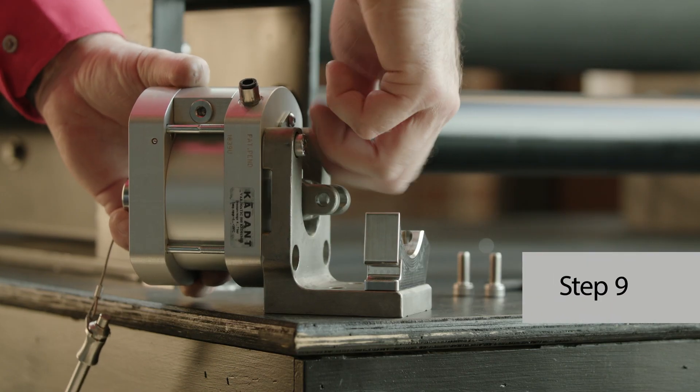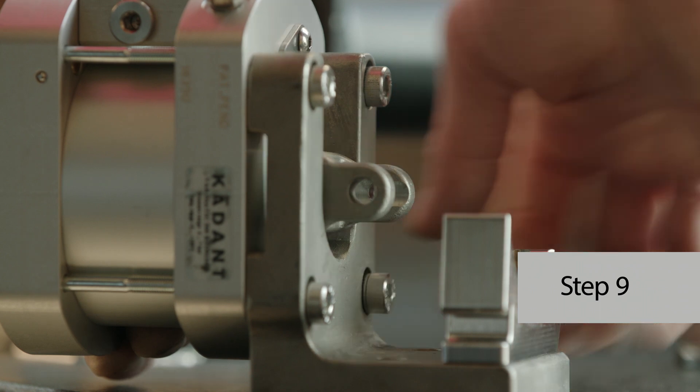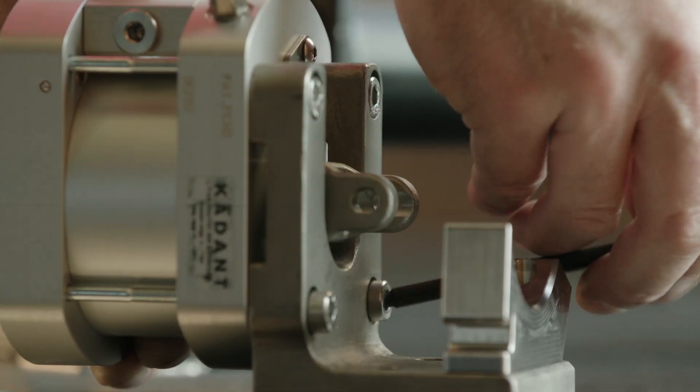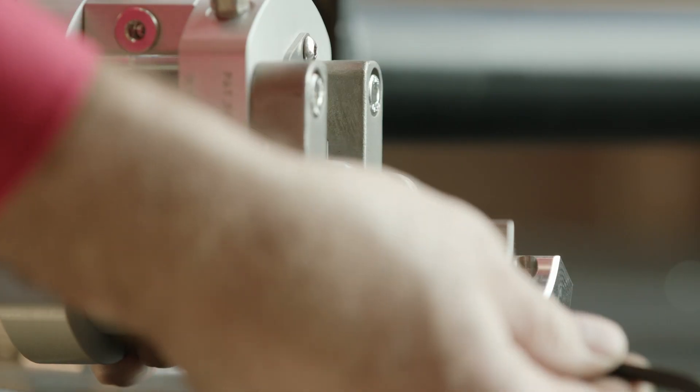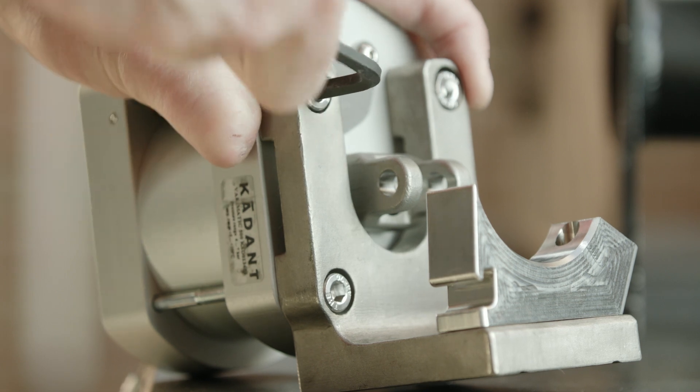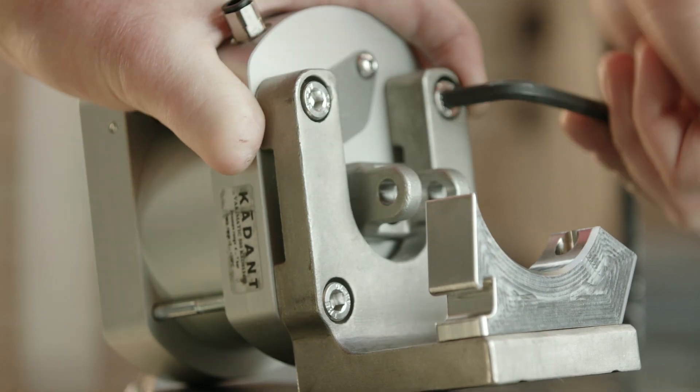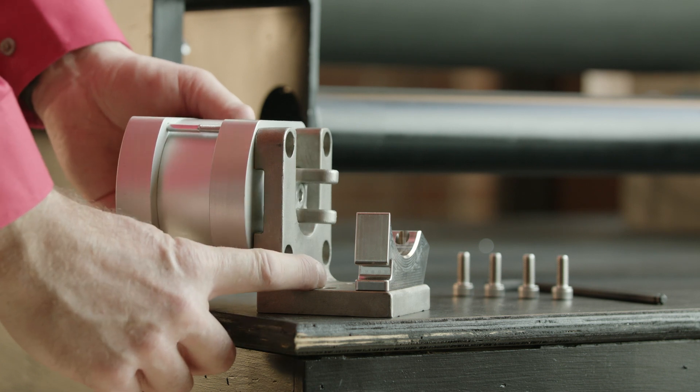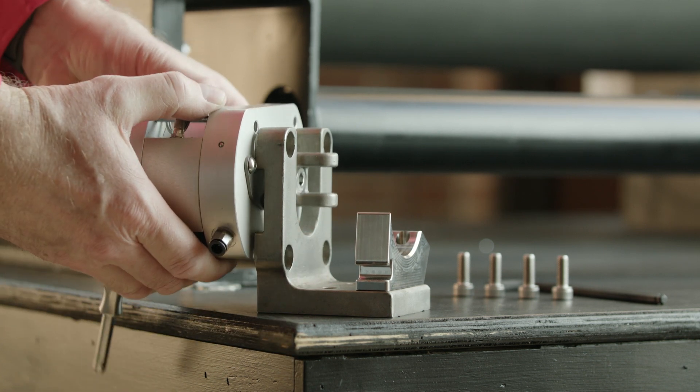Step nine, if not already assembled, fasten the Verimatic 500 oscillator onto the oscillator mount bracket using four M8 by 20 millimeter long socket head cap screws. The oscillator may be installed in any orientation as required for your application. As you can see, multiple sets of mounting holes are on the unit for various mounting setups.